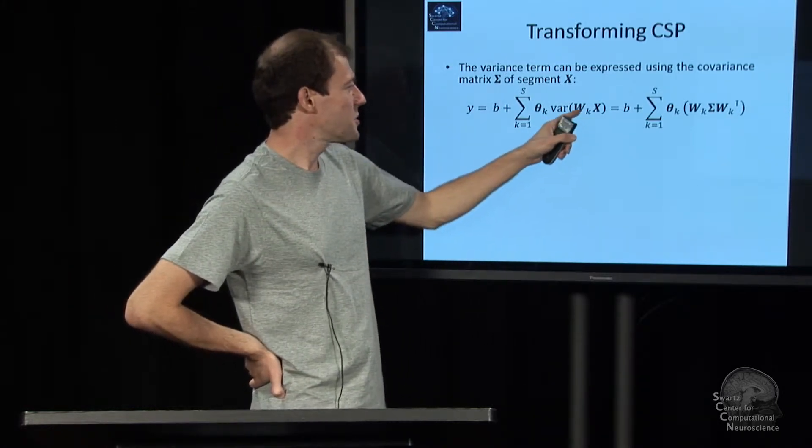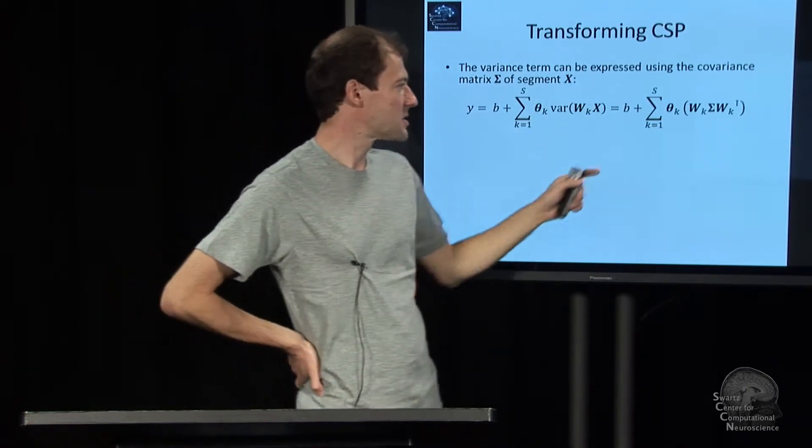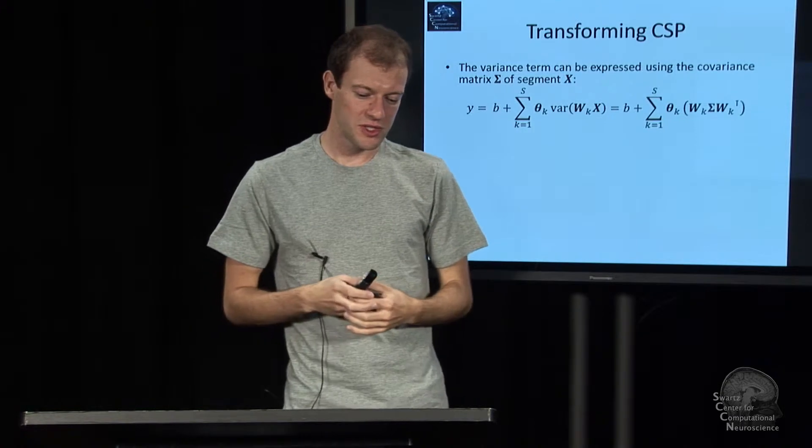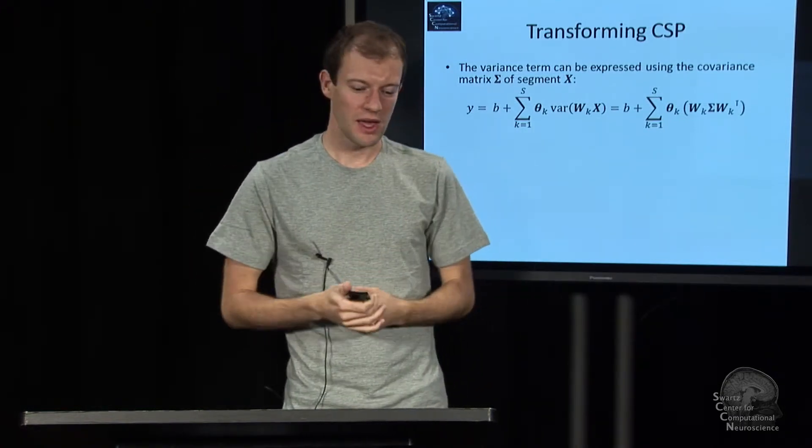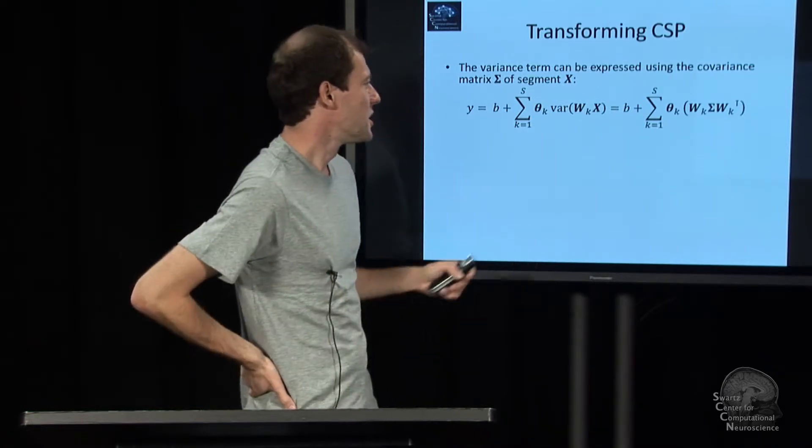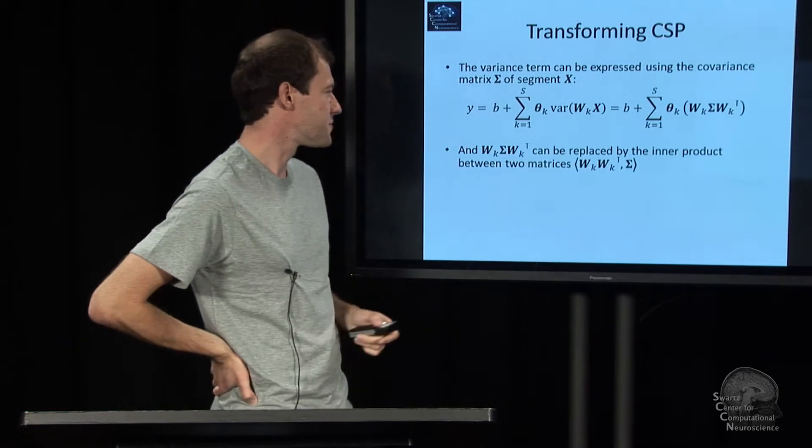Applying a spatial filter to some data and then taking the variance of that is actually the same as taking the covariance matrix of that data and pre- and post-multiplying that spatial filter. That's the same trick used in the CSP cost function we saw in lecture seven. The covariance matrix is data X times X transpose divided by number of observations, and if you pre- and post-multiply this, you have WK times X times X transpose times WK. So it's the same as the covariance of the spatially filtered X, and for one component, the covariance of a time series is the variance.